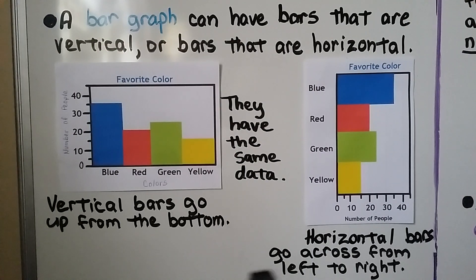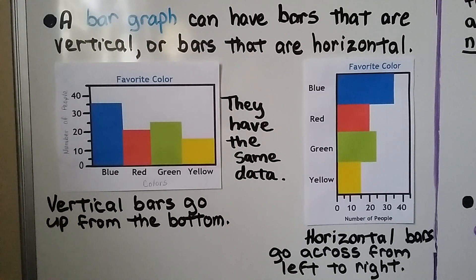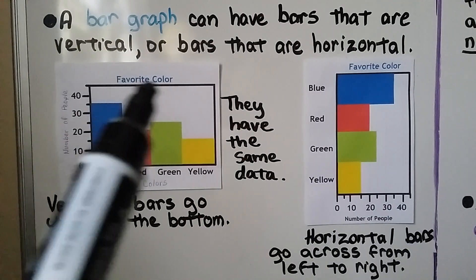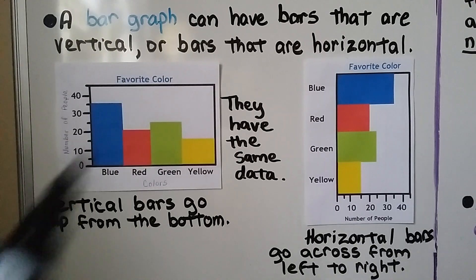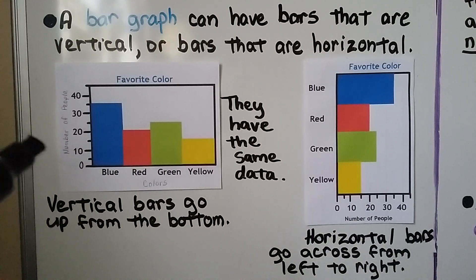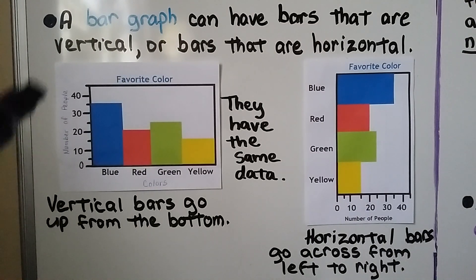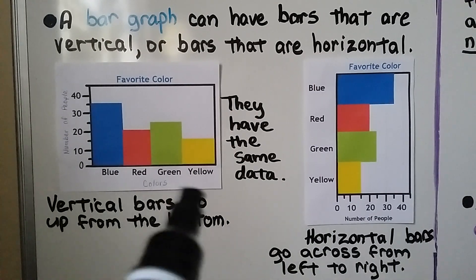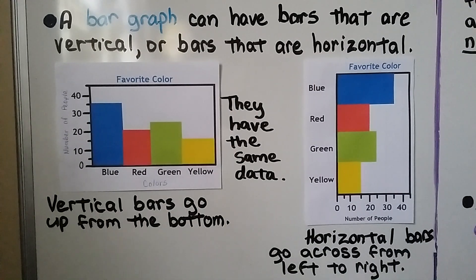Both graphs have the same data — one has vertical bars that go up from the bottom, and the other has horizontal bars that go across from left to right. Just like a frequency table, tally table, or picture graph, a bar graph has a title at the top with each word capitalized, a label for what the scale is counting, and a label at the bottom for what the answers are.